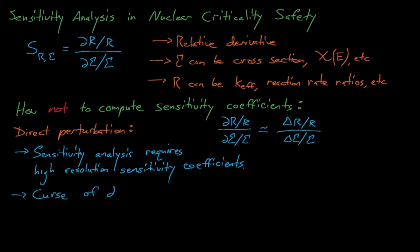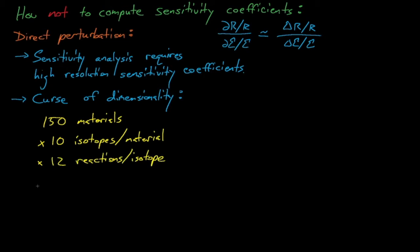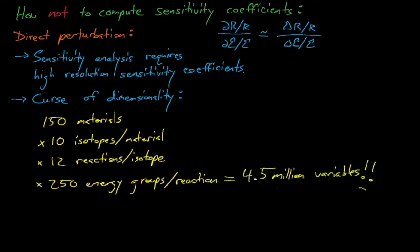This kind of problem might require computing sensitivity coefficients for a system with 150 unique materials, each possibly having around 10 isotopes per material, with each isotope requiring sensitivity coefficients for about 12 reactions — such as fission, elastic scatter, inelastic scatter, radiative capture, N-alpha reactions, N-to-N reactions, N-p reactions, etc. If we need to estimate these sensitivities across 250 energy groups, which is the normal number for some codes, then that means we need to compute these sensitivities for 4.5 million uncertain variables.